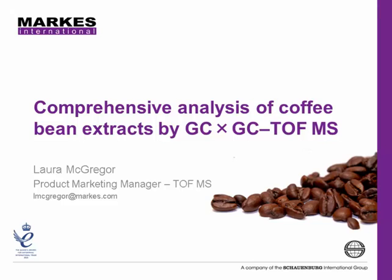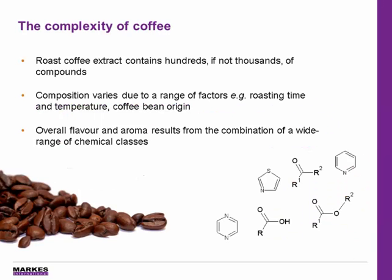In this video application, we're going to look at the separation and identification of complex coffee extracts using comprehensive two-dimensional GC coupled with time of flight mass spectrometry. The taste and aroma of coffee is made up of hundreds if not thousands of different compounds across a wide range of chemical classes, some of which are shown on that slide. The variety of these compounds and the ratios that they're found in can be altered by a wide range of factors, such as roasting time and temperature, and the origin of the coffee beans being used. This means that slight differences in the coffee production process can have a huge effect on the characteristics of the final product.